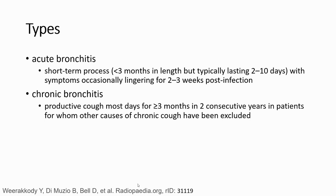There are two types of bronchitis. The first one we call acute bronchitis — it means a short-term process with symptoms occasionally lingering for two to three weeks post-infection. Chronic bronchitis is a productive cough on most days for more than three months in two consecutive years in patients for whom other causes of chronic cough have been excluded. Chronic bronchitis is a type of COPD.